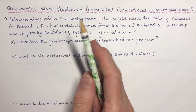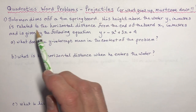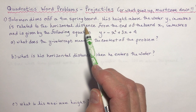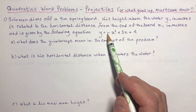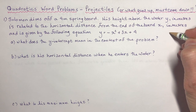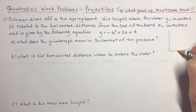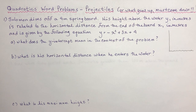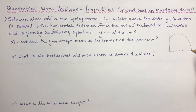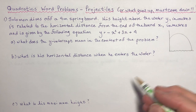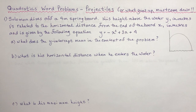Solomon dives off a four meter springboard. His height above the water y in meters is related to the horizontal distance from the end of the board x in meters and is given by the following equation. So you have some guy going off a meter board into the water - obviously you can't have a negative height. He's going to start on the board, go up in the air, and come down and land in the water. It's always a good idea to make a little sketch - it helps you figure out what you're talking about.